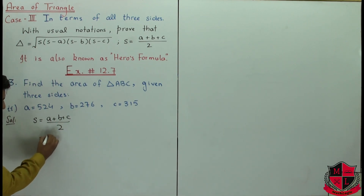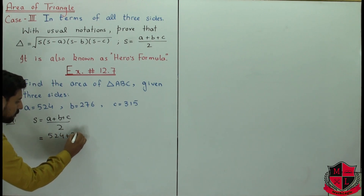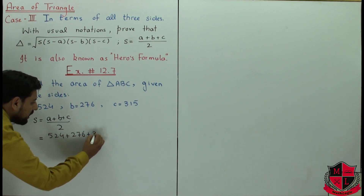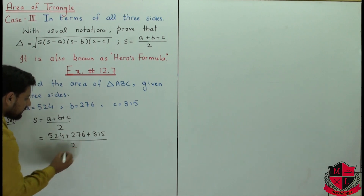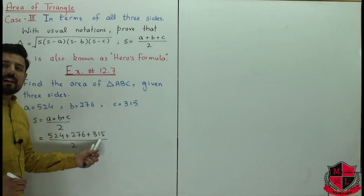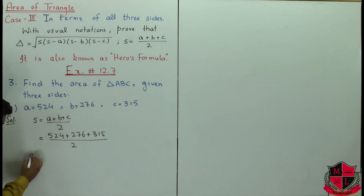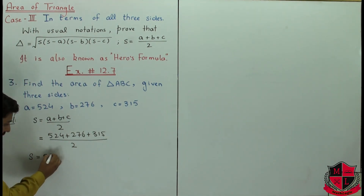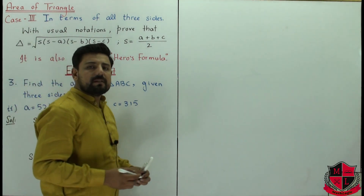The three sides are: a = 524, b = 276, and c = 315. So s equals (524 + 276 + 315) divided by 2. Adding the three sides and dividing by 2 gives s = 557.5.